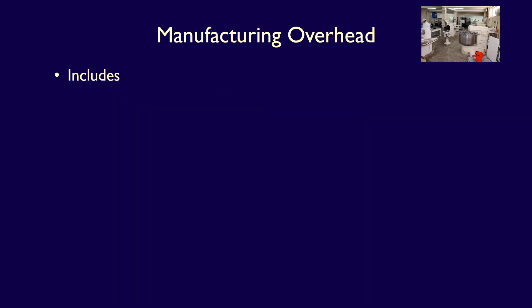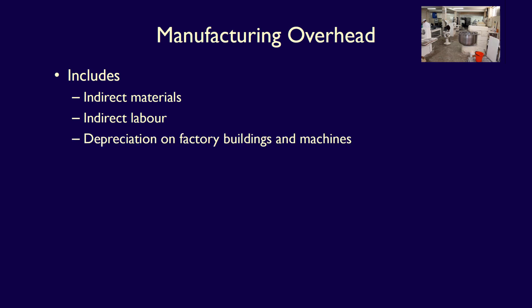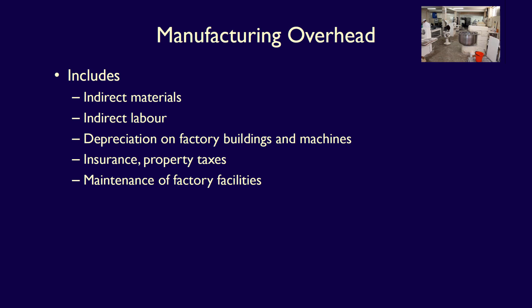What costs are included in manufacturing overhead? Raw materials that cannot be easily associated with the finished product, called indirect materials. Labor which cannot be easily associated with the finished product, called indirect labor. Depreciation on the factory buildings and machines. Insurance on the factory and property taxes incurred on the factory. The cost of maintenance of the factory facilities. Supervisor salaries, because their work cannot be traced to any one product. Equipment lease or rental costs. And the list goes on.